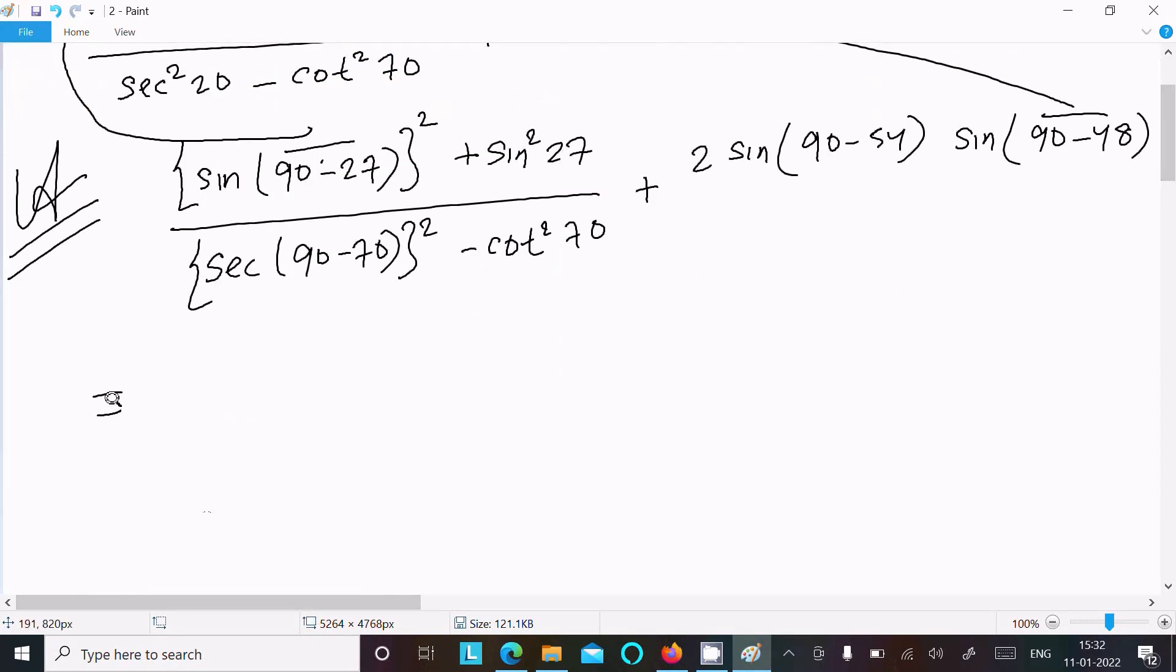Now after doing this, sin 90 minus theta that is equal to cos theta. So here cos 27 square is there, we can write square in this place, and here sin square 27.